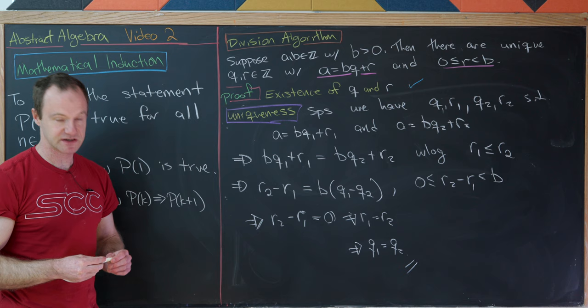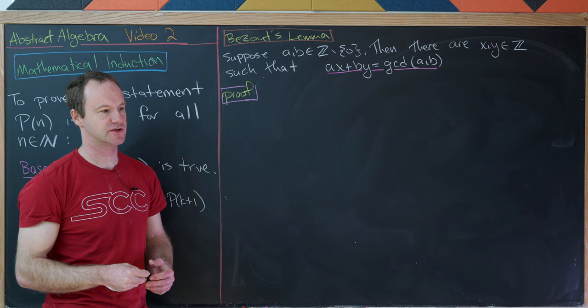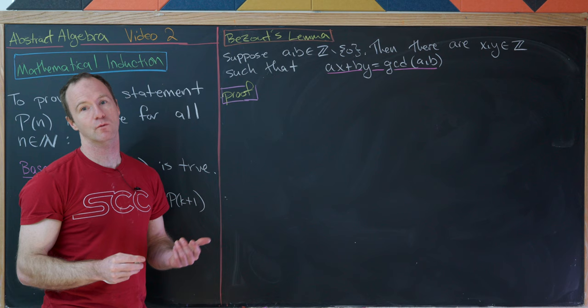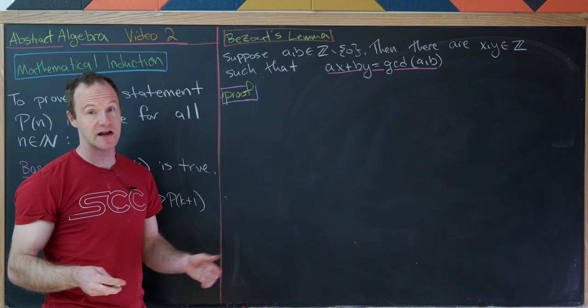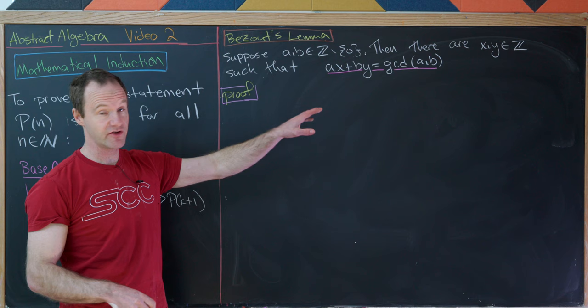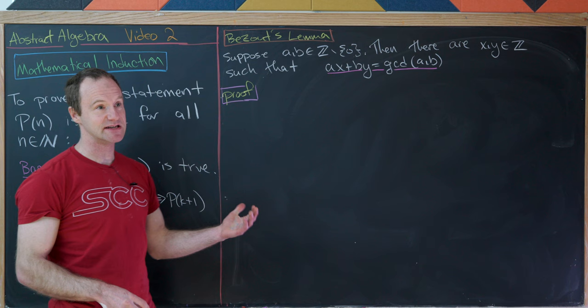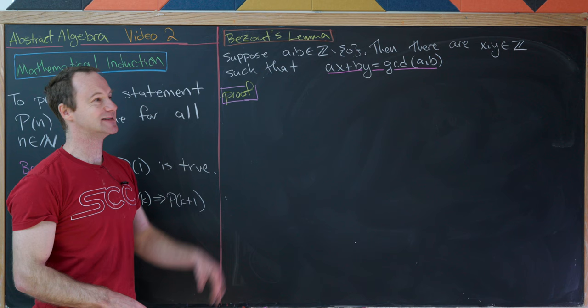Now we're going to prove Bezout's lemma, which has to do with the GCD of two integers. If A and B are non-zero integers, then there exist integers X and Y such that AX + BY = gcd(A, B). In other words, we can write the GCD of two numbers as a linear combination of those numbers. There's no uniqueness claim here because this writing is not unique, as we'll see via example.